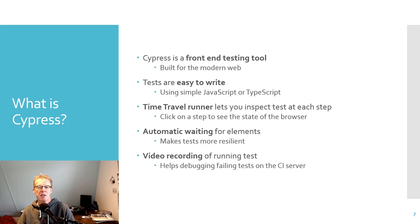Cypress has an interactive runner which lets you step through the different steps of your test — kind of a time travel debugger, so you can see exactly what went on in which step. Very useful when debugging tests. It will automatically wait for elements to appear, so if you're clicking on a button that hasn't rendered yet because the application is waiting for an Ajax request, you don't have to manually wait. Cypress will do that for you. It will also record videos of all your tests — not just locally, but on the CI server as well. So if your test fails, you can download the video and see exactly what the test was doing, which is a pretty nice way to debug tests on a remote machine.